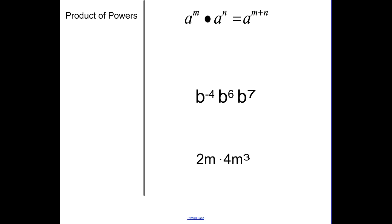First is the product of powers. When I have a to the m times a to the n, I'm multiplying things with the same base — notice the base is a and a. What we're going to do is add the exponents. So when I have b to the 4th times b to the 6th times b to the 7th, this is the same thing as b to the negative 4th plus 6 plus 7. Negative 4 plus 6 is 2, plus 7 is 9, so it simplifies to b to the 9th.